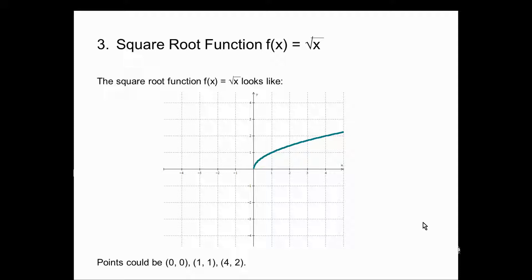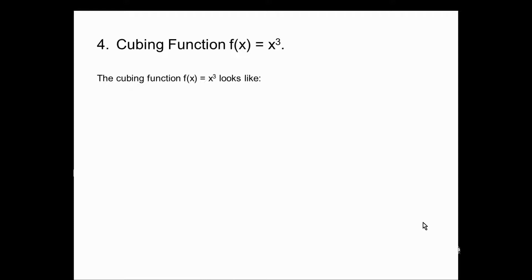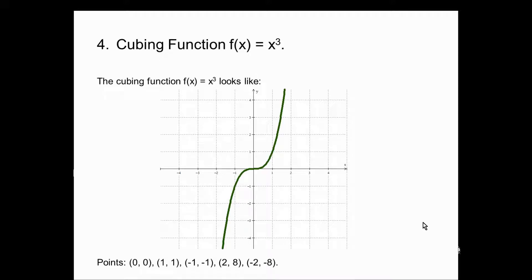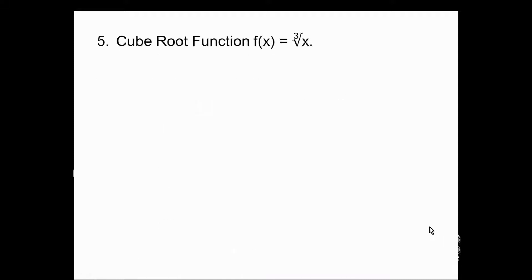Our fourth basic function: the cubing function, f(x) = x³. The points I used were (0, 0), (1, 1), (−1, −1), (2, 8), and (−2, −8). We may have seen this graph in connection with symmetry — it is symmetric with respect to the origin, because both coordinates change signs, and if you rotate through 180 degrees, it's the same graph.